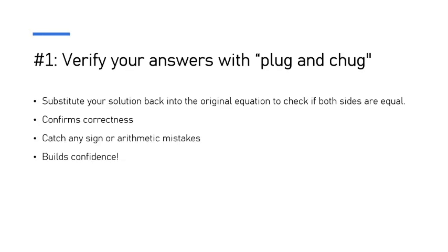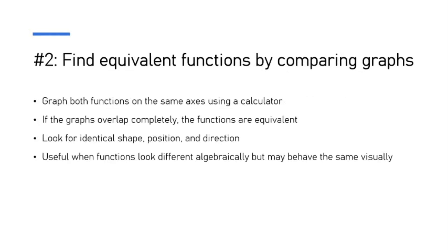The first thing you want to keep in mind is verify your answers by plugging and chugging with your graphing calculator. You can substitute the solution that you get into the original equation to check if both sides are equal, and it confirms whether your answer is right or wrong. It can catch any signs of arithmetic errors or sign errors that you end up making, and that's going to give you confidence that your answer is actually correct.